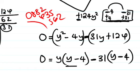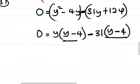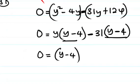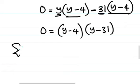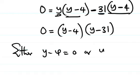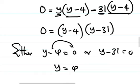This bracket is the same as that bracket. Then we have 0 equals bracket y minus 4 times y minus 31. Either y minus 4 equals 0, so y equals 4, or y minus 31 equals 0, so y equals 31.